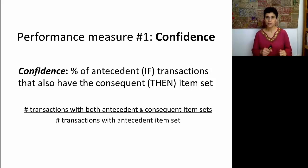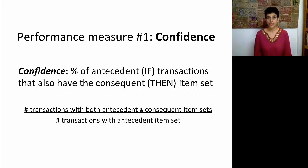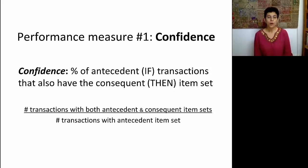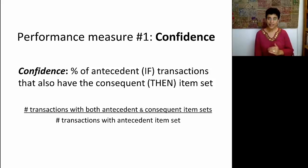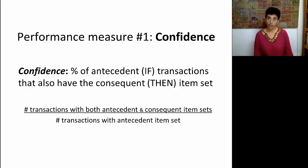Here we are distinguishing between the antecedent and the consequent. Confidence is defined as the percent of antecedent transactions that also have the consequent item set. To compute this, we look in the numerator at the number of transactions that have both the antecedent and consequent item sets — the if and the then — and divide that by the total number of transactions that have the antecedent in them, which will likely be a larger set.